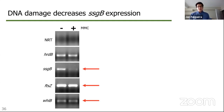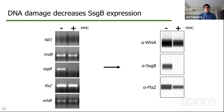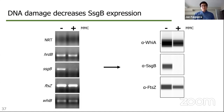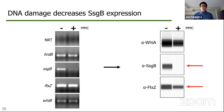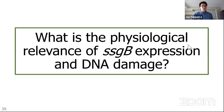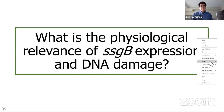We then moved from transcription state to protein levels, which I assessed using automated Western blotting. I blotted for three proteins: WhiA, another sporulation regulator and partner to WhiB, which serves as the internal control; SSGB; and FtsZ. In response to mitomycin C, there is a clear loss of SSGB protein, while FtsZ protein levels have been reduced but are still present. This data supported the main hypothesis: that a response to DNA damage in Streptomyces involves loss of SSGB expression.